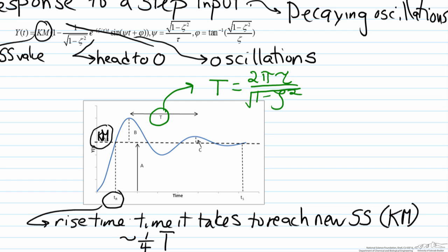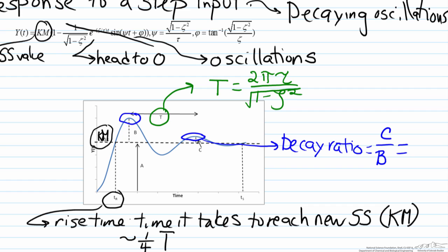Another value of interest is the decay ratio. The decay ratio represents how much the peaks are decreasing each time we reach that point. It is defined as c over b, and in terms of tau and zeta it can be represented as the exponential of negative 2 pi zeta divided by the square root of 1 minus zeta squared. Notably, the time constant does not influence this — it is dictated only by zeta.